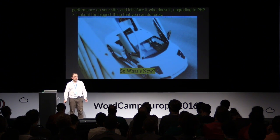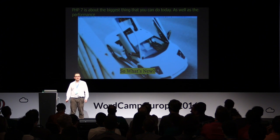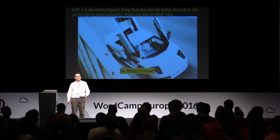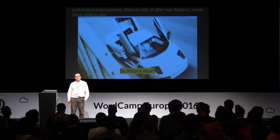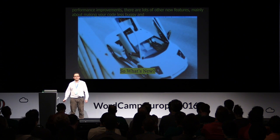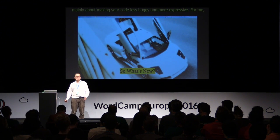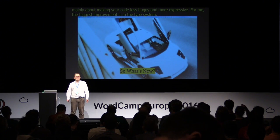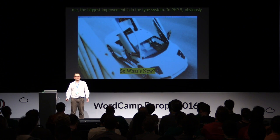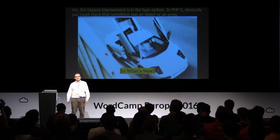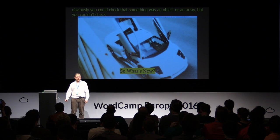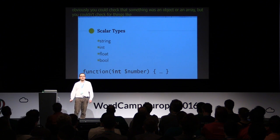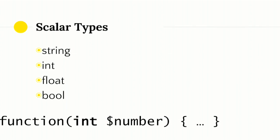As well as the performance improvements, there are lots of other new features, mainly about making your code less buggy and more expressive. For me, the biggest improvement is in the type system. In PHP 5, obviously, you could check that something was an object or an array, but you couldn't check for things like strings and integers. Now in PHP 7 you can do this — you can check for scalar types like string, integer, floats, and booleans. They work exactly the same way as the type system in PHP 5.